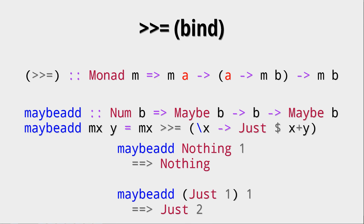As we can see here, if we do some adding with a Nothing, we actually get a Nothing, which is what we want, because we cannot add to a Nothing. So the error — if some error happened — is propagated. And if we have a Just of one, for example, and we add a one to it, we get a Just two. So this works just as expected.